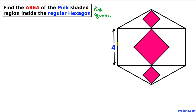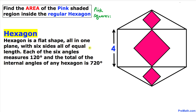Welcome to pre-math. In this video tutorial we have a regular hexagon whose side length is four units, and we have three pink squares inside this regular hexagon. We are going to calculate the area of this pink shaded region.